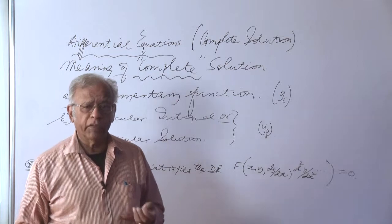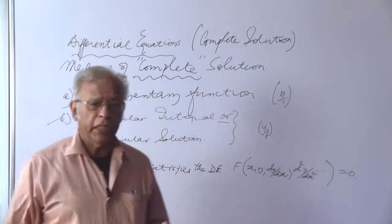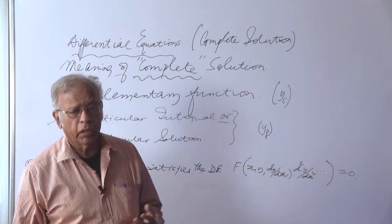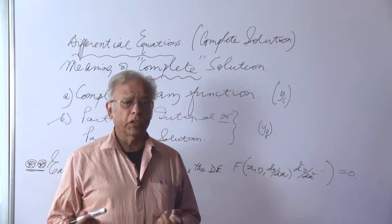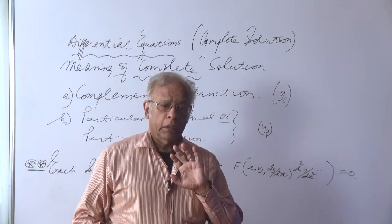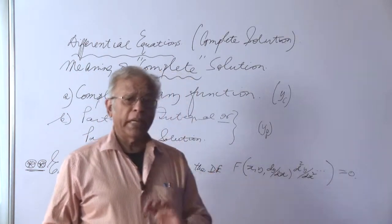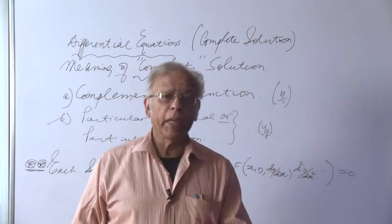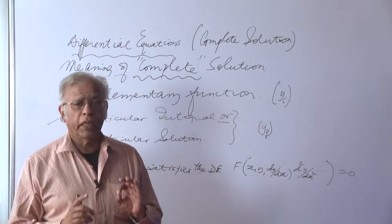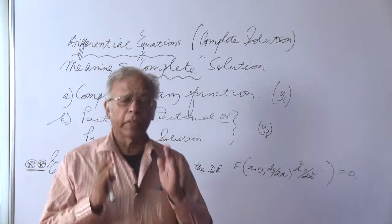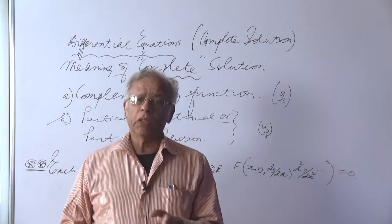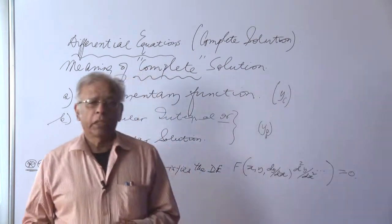If we are handling a second order differential equation, whether it is linear or of higher degree — meaning the second order derivative is raised to the power of 2 or 3 — the order of the differential equation still remains 2, and the general solution cannot contain more than two independent arbitrary constants. If it contains less than two independent arbitrary constants, it becomes a particular solution to that second order differential equation.